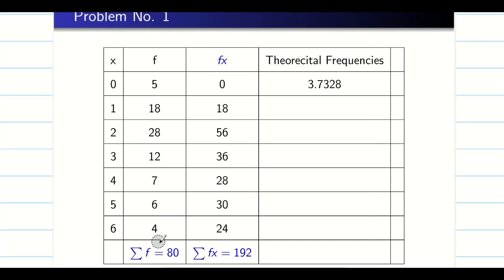When you put 0, you will get the answer 3.7328. Then one by one guys, you are going to do. Then press calc again. Put 1. Press calc again. Put 2, 3, 4, 5, 6. Done guys.